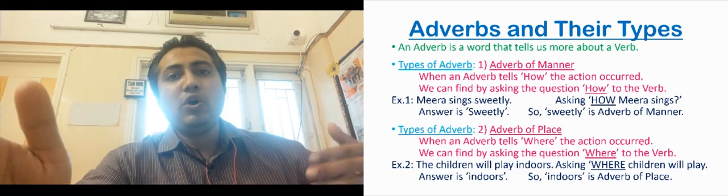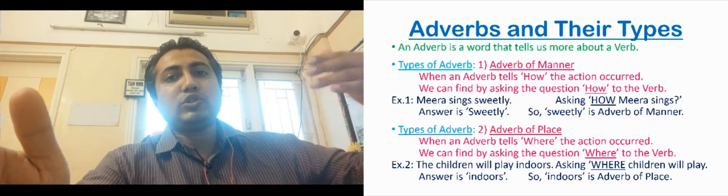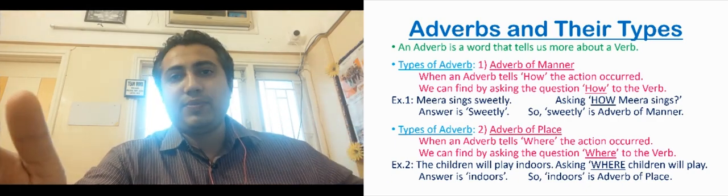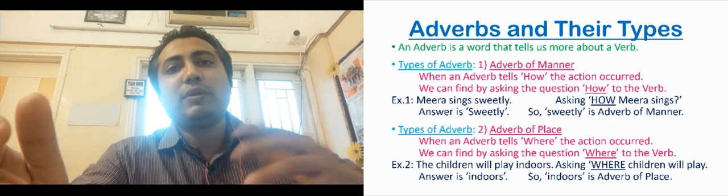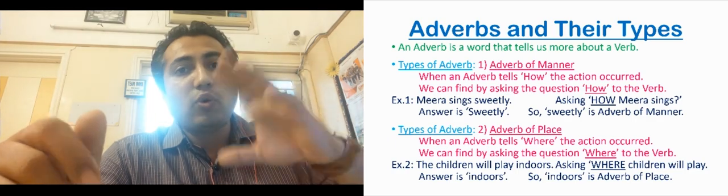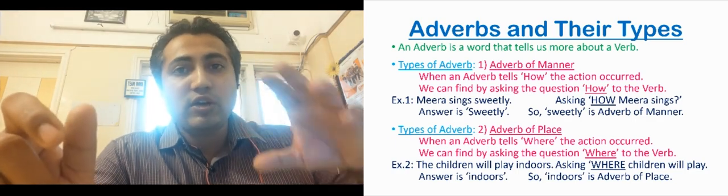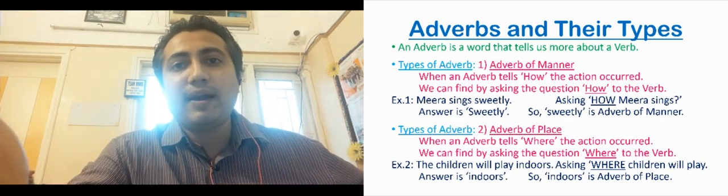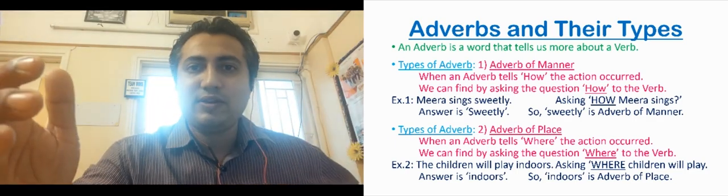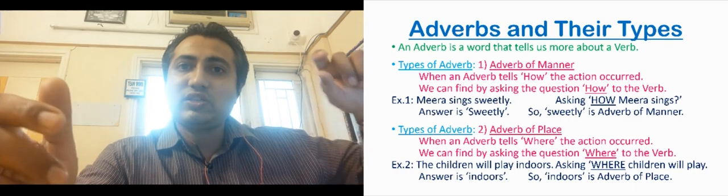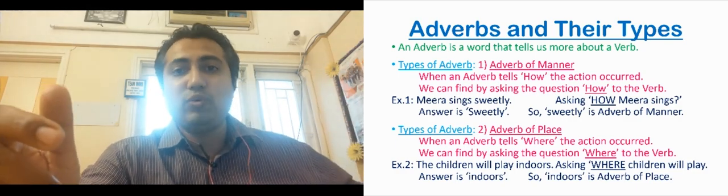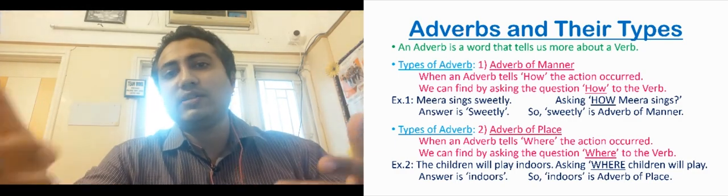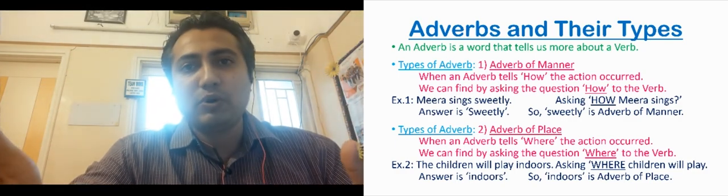Another example: I saw your brother here. The action going on is saw. Where? Here. So here is telling about where the action was done. So here is also an adverb.